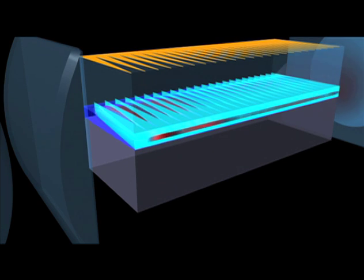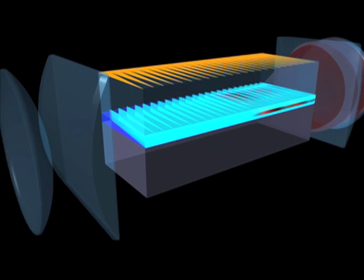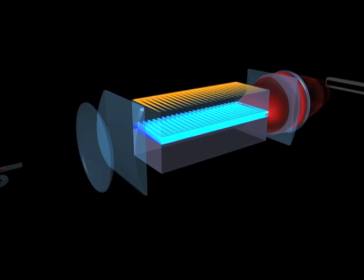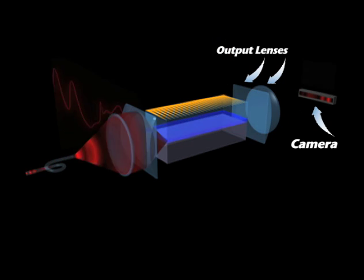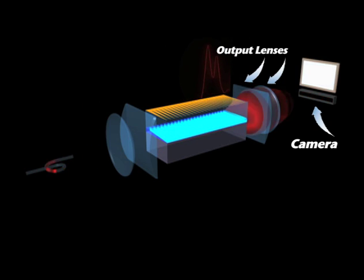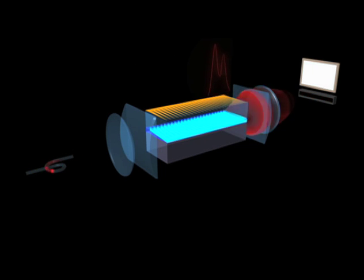The signal exiting the waveguide is collimated by a cylindrical lens and then focused by a final lens to a spot on a pixelated camera. The deflection encoded signal is manifested as a sweep at the focal plane.